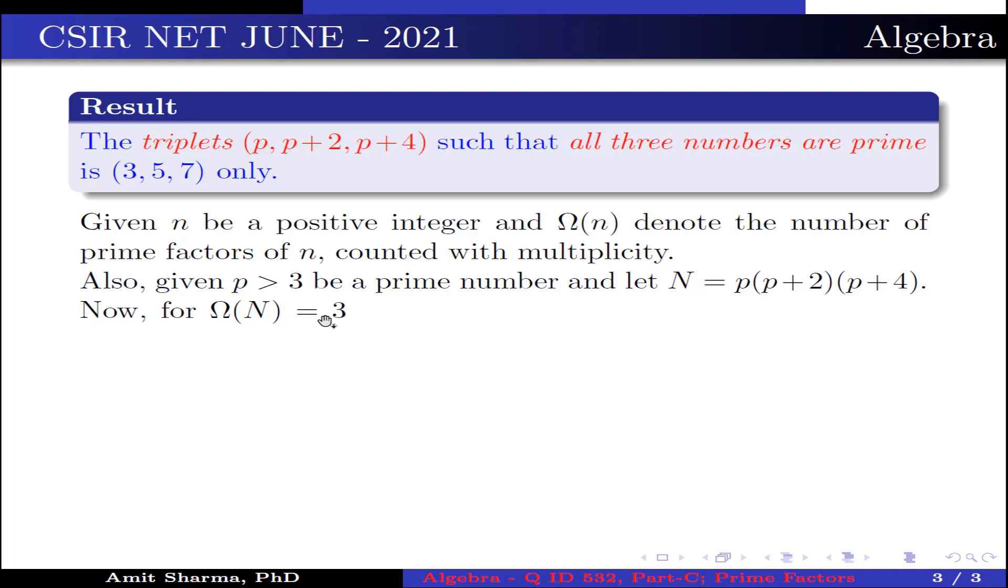Now, for Ω(N) = 3, that is, N has 3 prime factors only, we must have p = 3, which is a contradiction to the given, because we have to take p > 3. This implies option 2 is false and option 1 is true. Why? Because if we take any prime number greater than 3, then the number of prime factors of N cannot be 3. It is always greater than or equal to 3.